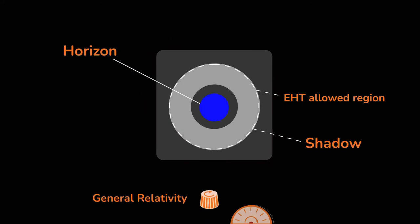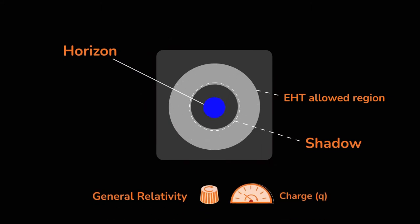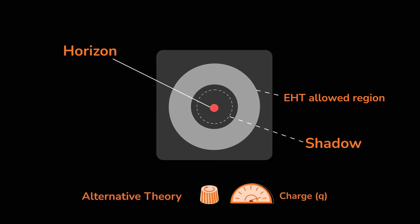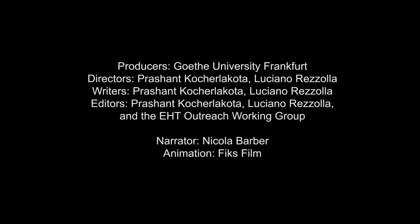By comparing the shadow sizes predicted for various well-known black holes with these limits, we can set constraints on the charges and exclude some black hole models.